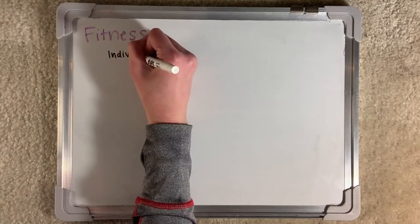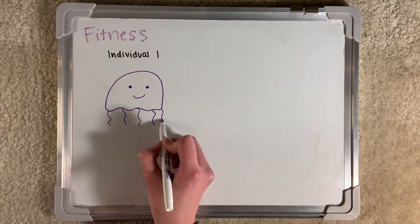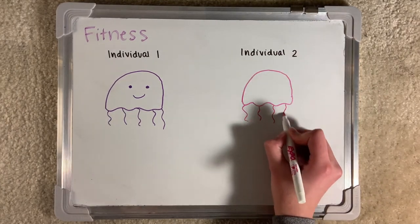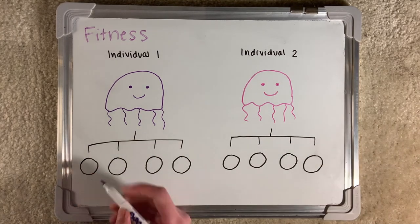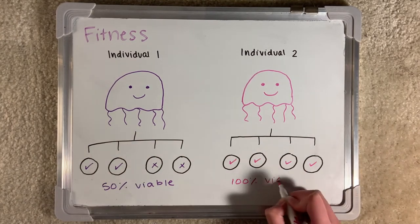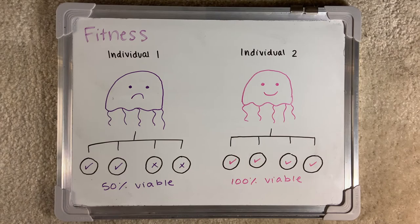In comparing the outcomes of the two jellyfish gametes, it can be seen that the pink jellyfish has twice as many viable gametes. This means that the pink jellyfish would be expected to have a higher fitness than the purple jellyfish because a larger portion of its offspring would survive to pass on its genes.